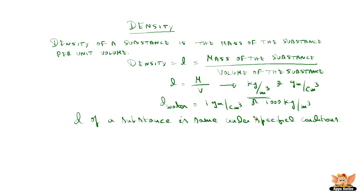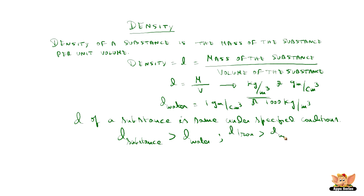If the density of a substance is greater than the density of water, then the substance is heavier than water and it sinks. For example, if you put an iron ball into water, it sinks because the density of iron is greater than the density of water. So if density of a substance is greater than density of water, the substance sinks in water.